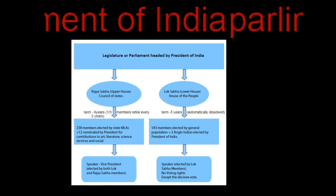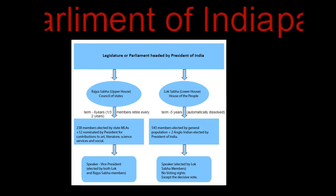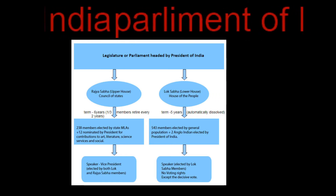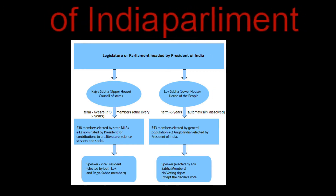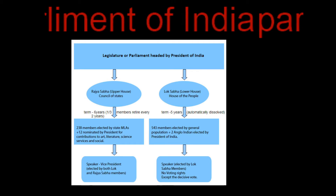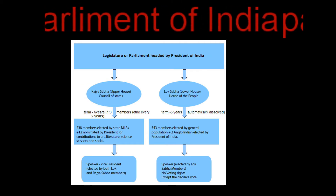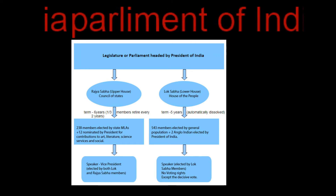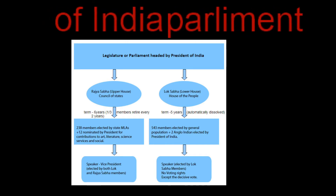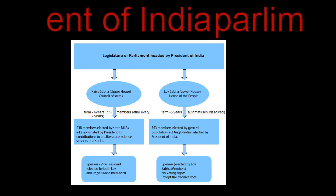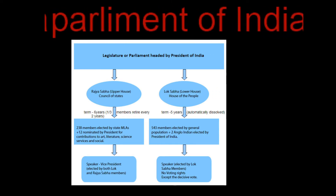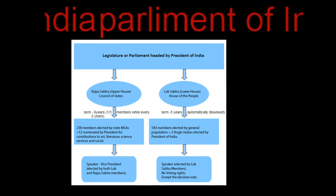The upper house of the Indian Parliament is called Rajya Sabha, or Council of State in India. The Rajya Sabha consists of 250 members. In 250 members, 238 members are indirectly elected by the state legislature. The other 12 members are nominated by the President of India.